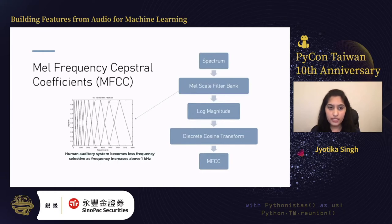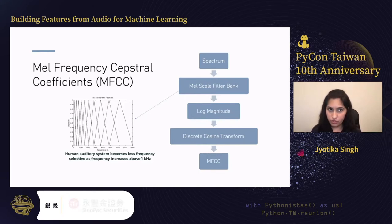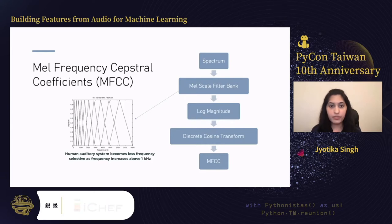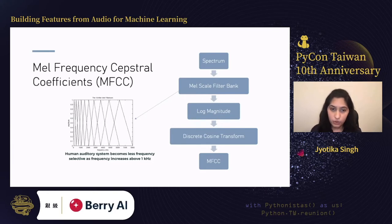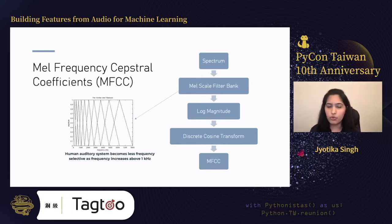Coming to actual features directly usable in machine learning models, inspired by the cepstrum and spectrum: the first is Mel Frequency Cepstral Coefficients (MFCC). It is computed by taking the spectrum of the signal, passing it through a mel-scale filter bank, followed by log magnitude and discrete cosine transform. The filters look like triangles that get wider as frequency increases, because human hearing becomes less frequency-selective above one kilohertz. The discrete cosine component captures the overall shape of the signal rather than smaller peaks, which tend to relate more to noise.